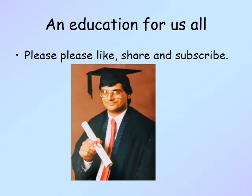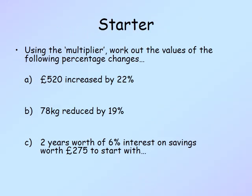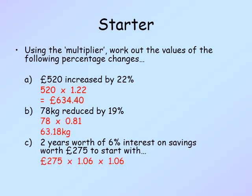As always I'll start off with the starter — I'll leave this up for five minutes. As you can see it's testing our previous knowledge of the multiplier. The first one: the amount is 520 and that is going to be increased by 22 percent, so it's 520 multiplied by 1.22, which gives us the answer 634.40.